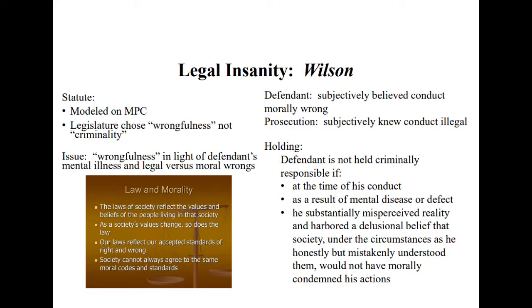The government, on the other hand, argued that 'wrongfulness' meant that if the defendant failed to appreciate society's moral standards, he was insane. In other words, if the defendant knew his conduct was illegal, then he appreciated society's moral standards and was not insane. Under the government's view, Wilson knew society would not condone his conduct but chose to act anyway on the basis of personal beliefs — making him sane.